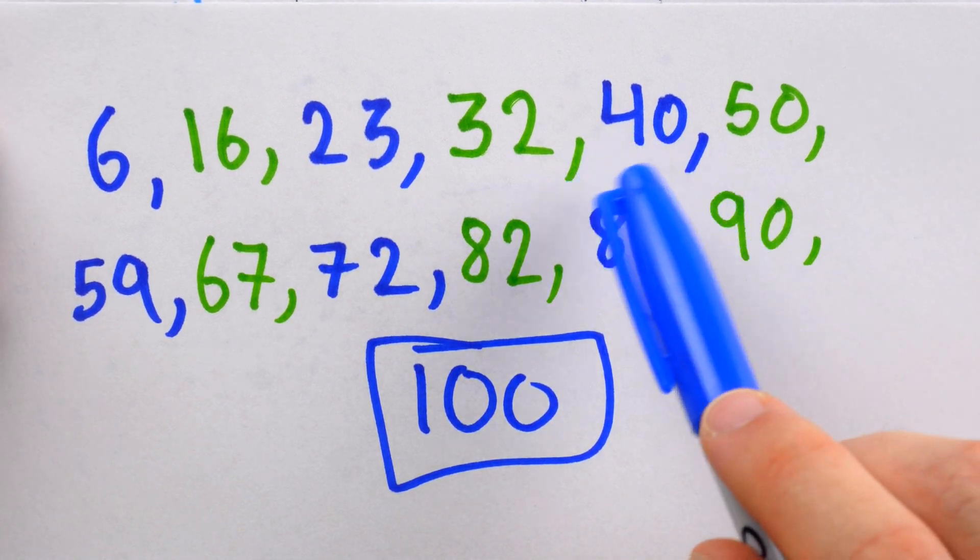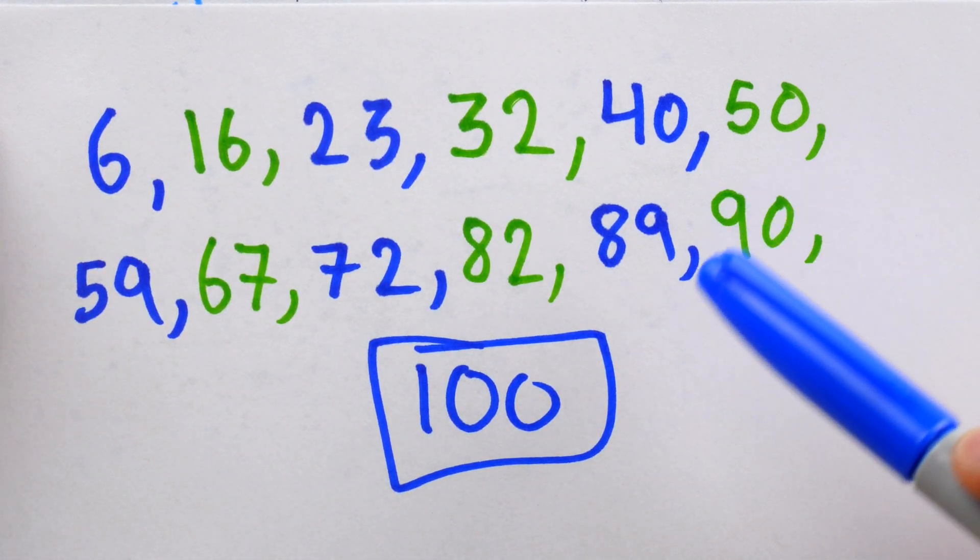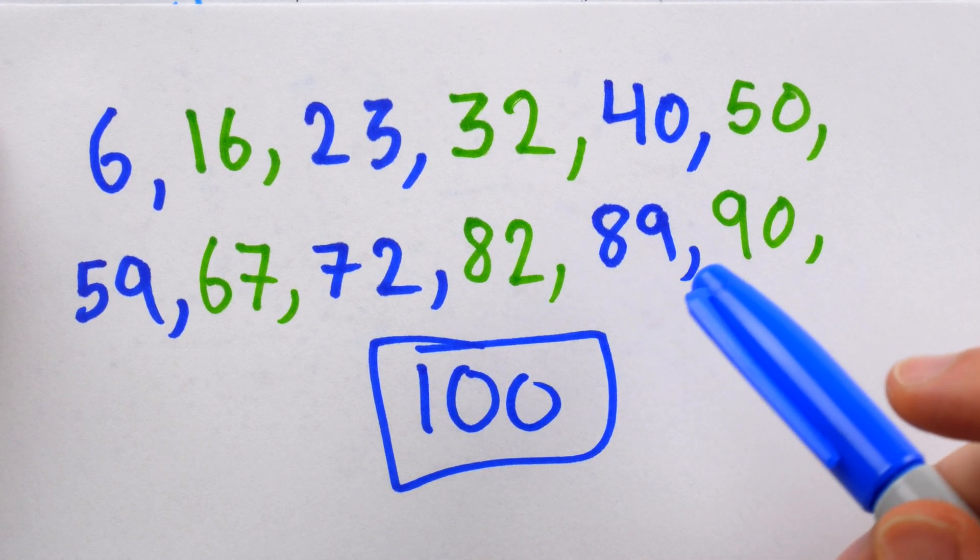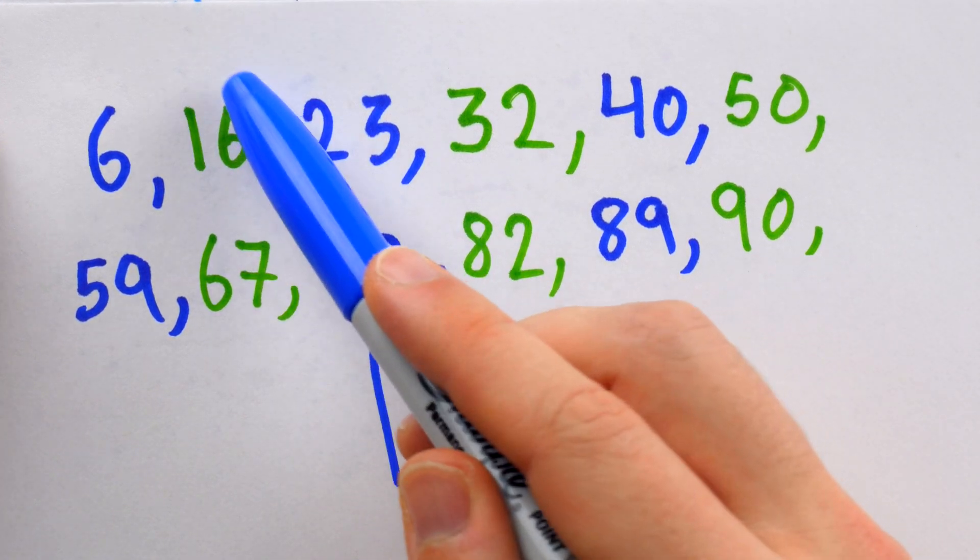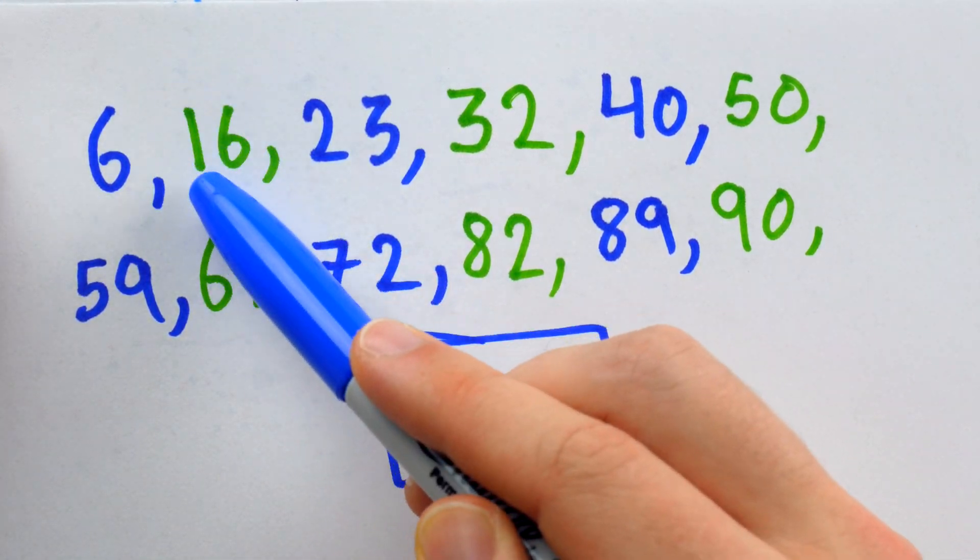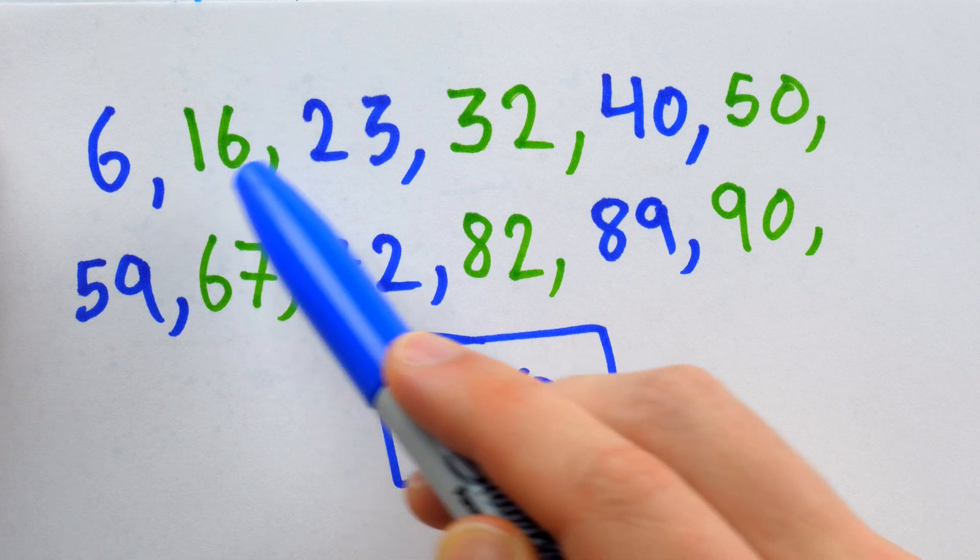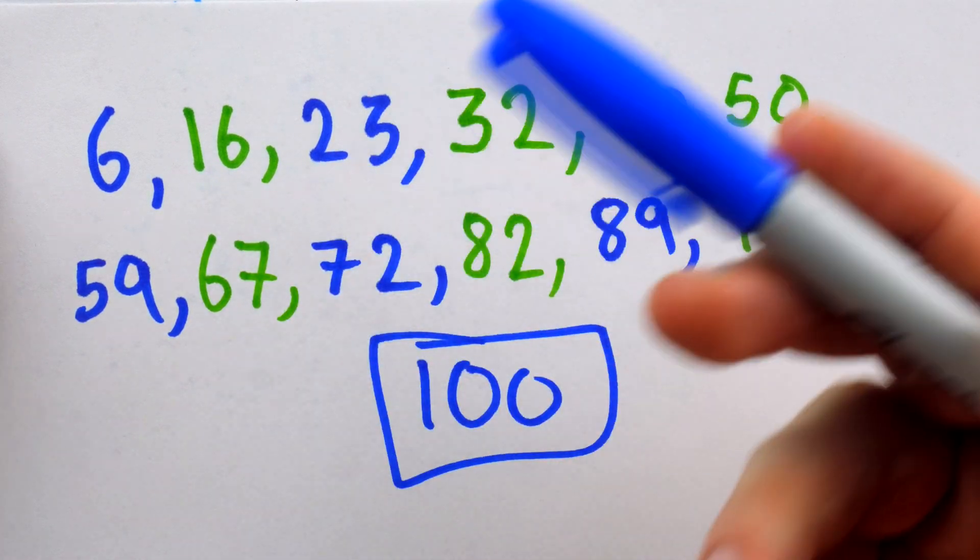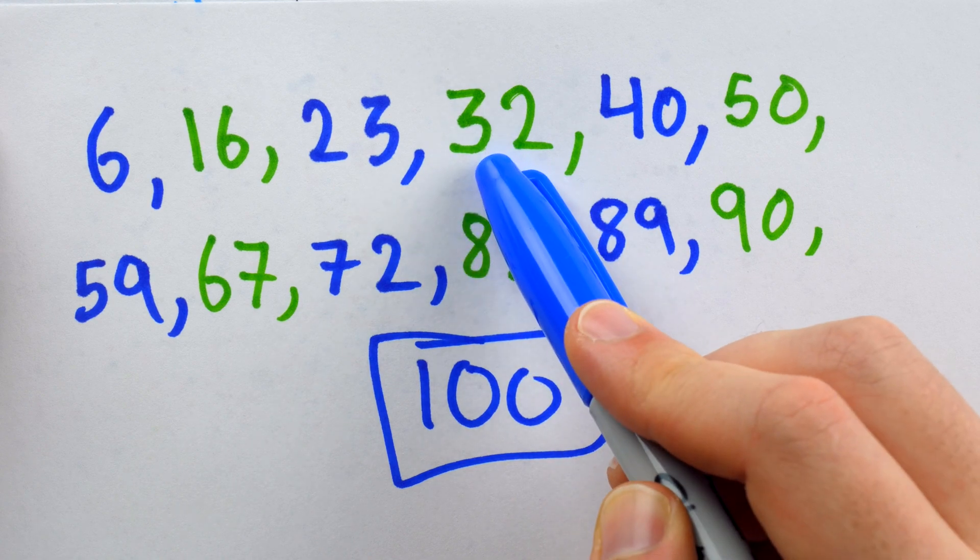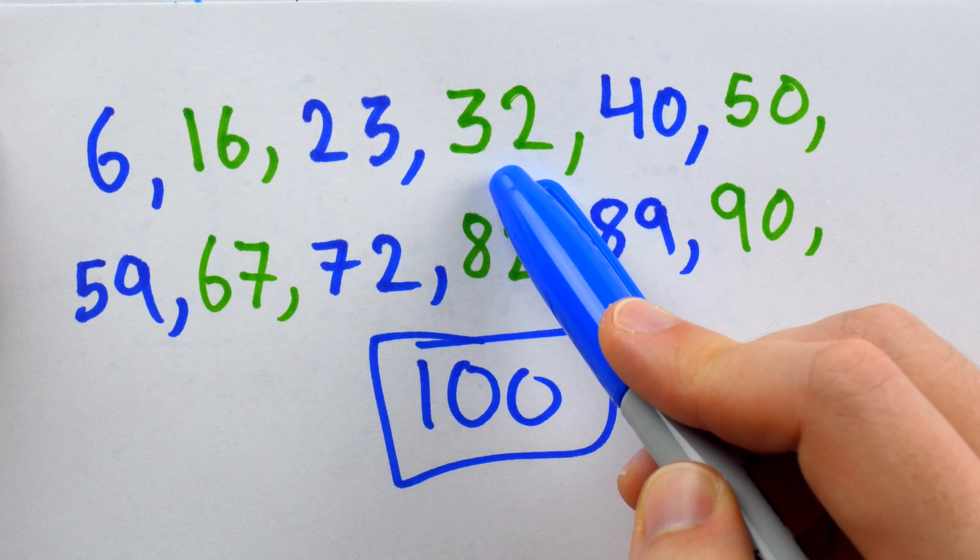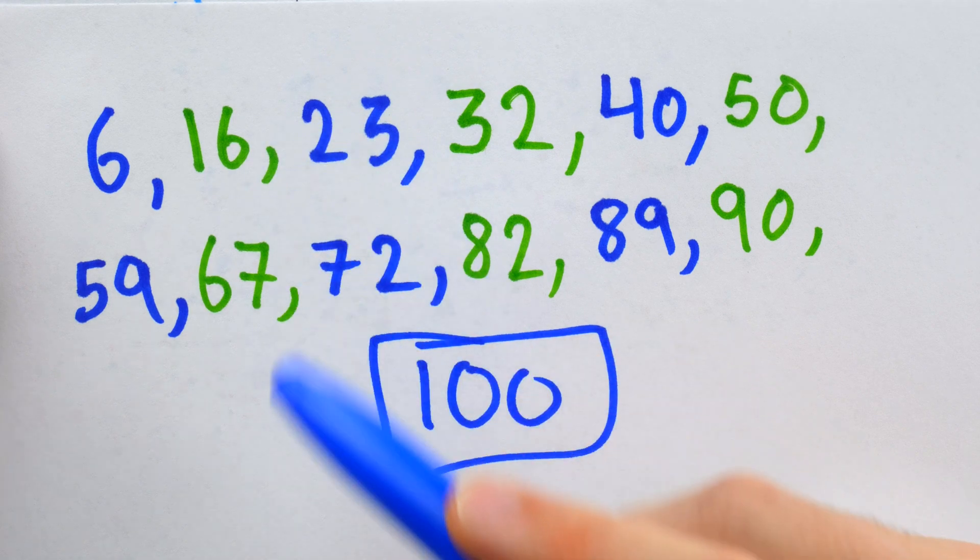First, we can learn where to start just by looking at this sequence of game states. Note that I'm saying game states rather than turns because really the state of the game is determined by the current subtotal and whose turn it is. And so, that's what we see here. We're not seeing the moves. For example, here the green player has a subtotal of 32 and the move they made to get here was adding 9 to the total of 23.